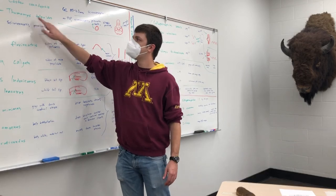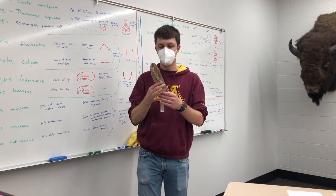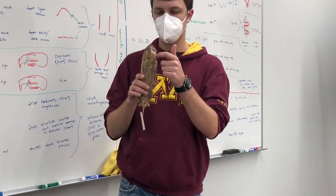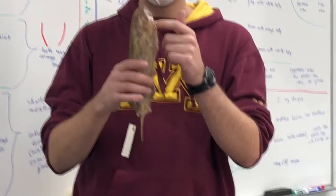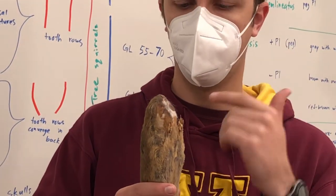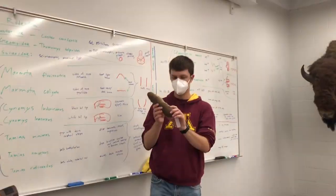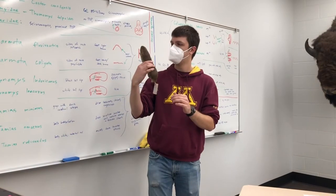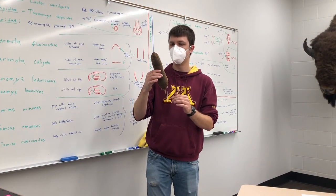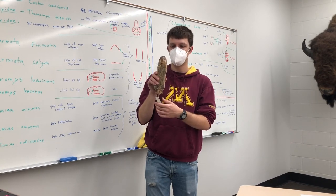For identifying the pocket gopher skin — Thomomys talpoides — one of the most useful things to know is that it has external cheek pouches. Here the cheek pouches are kind of closed, but you can see the line where it sticks food. These are external cheek pouches: just outside there's a flap of skin that it can hide things in. It also has feet with big claws. Other than that, you won't get it confused with, say, kangaroo rats or other things that have cheek pouches.